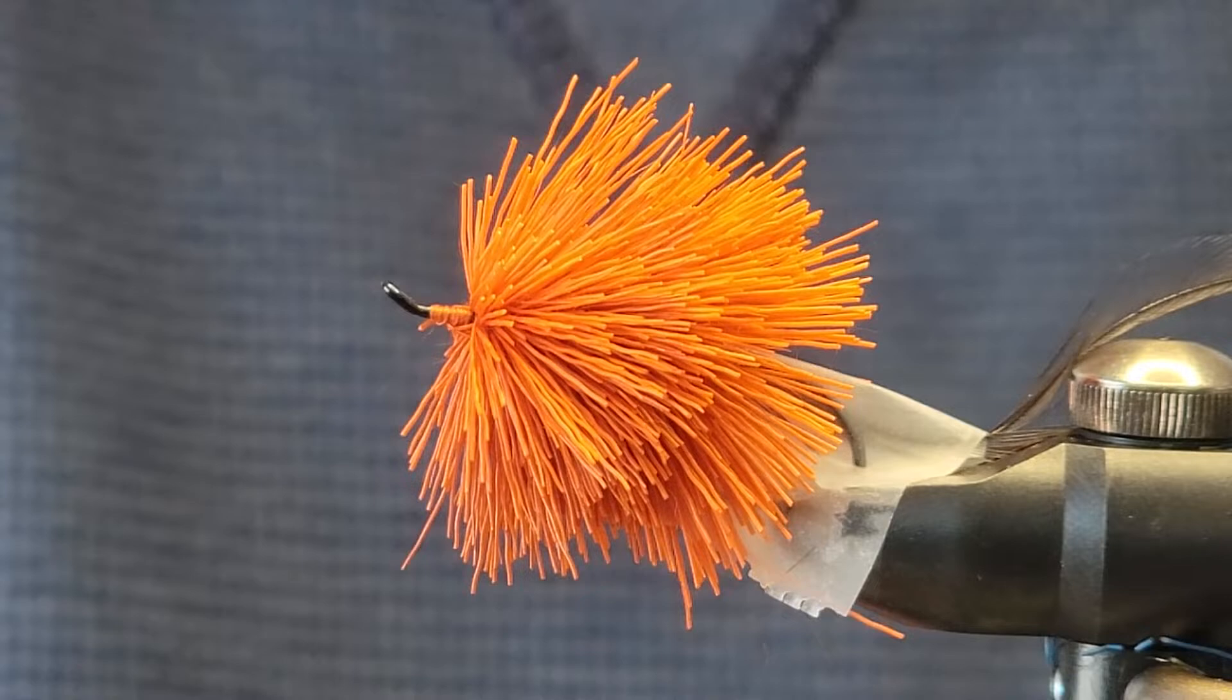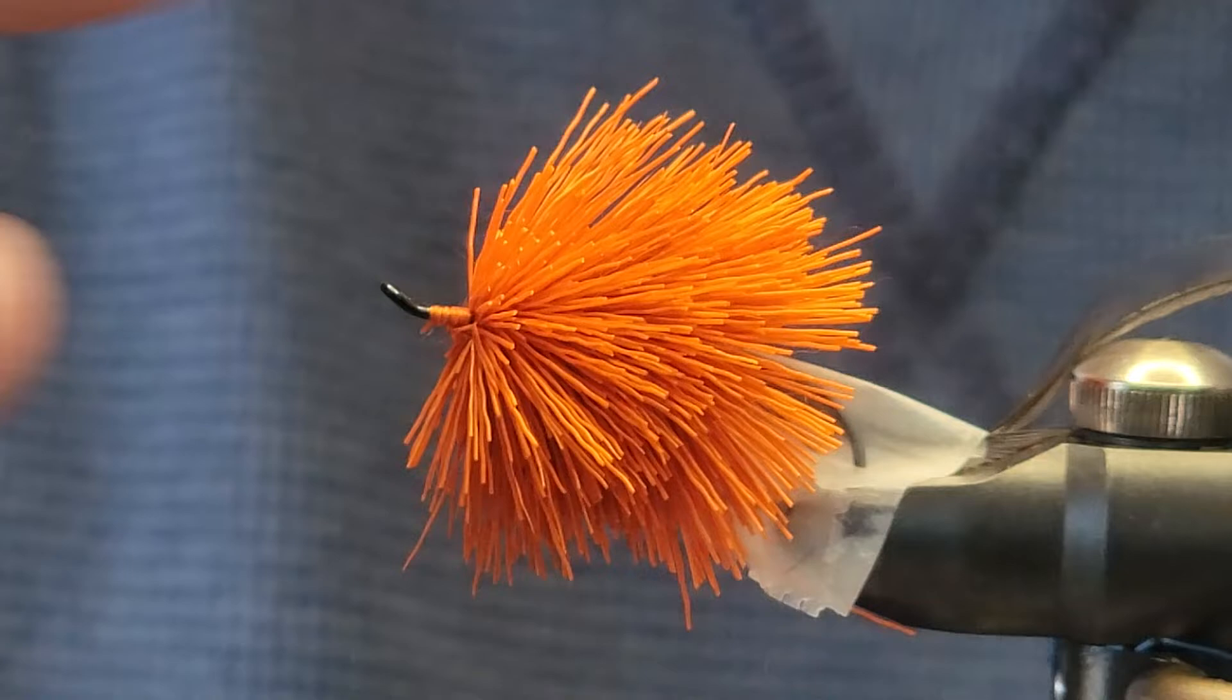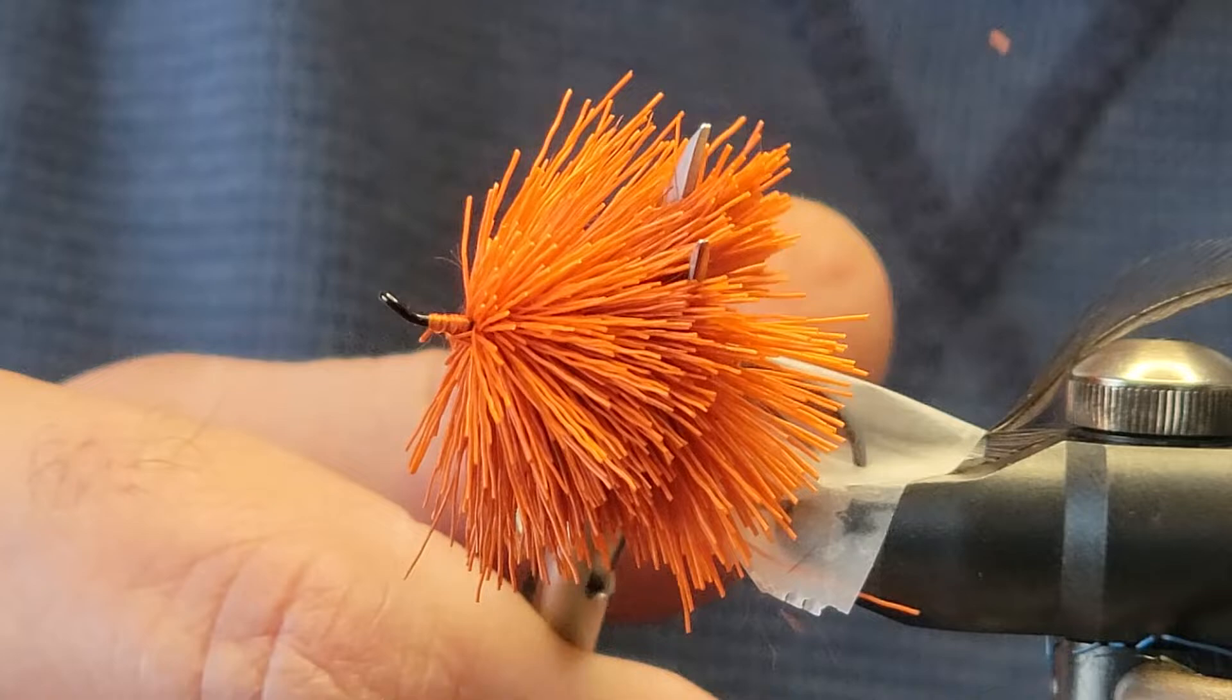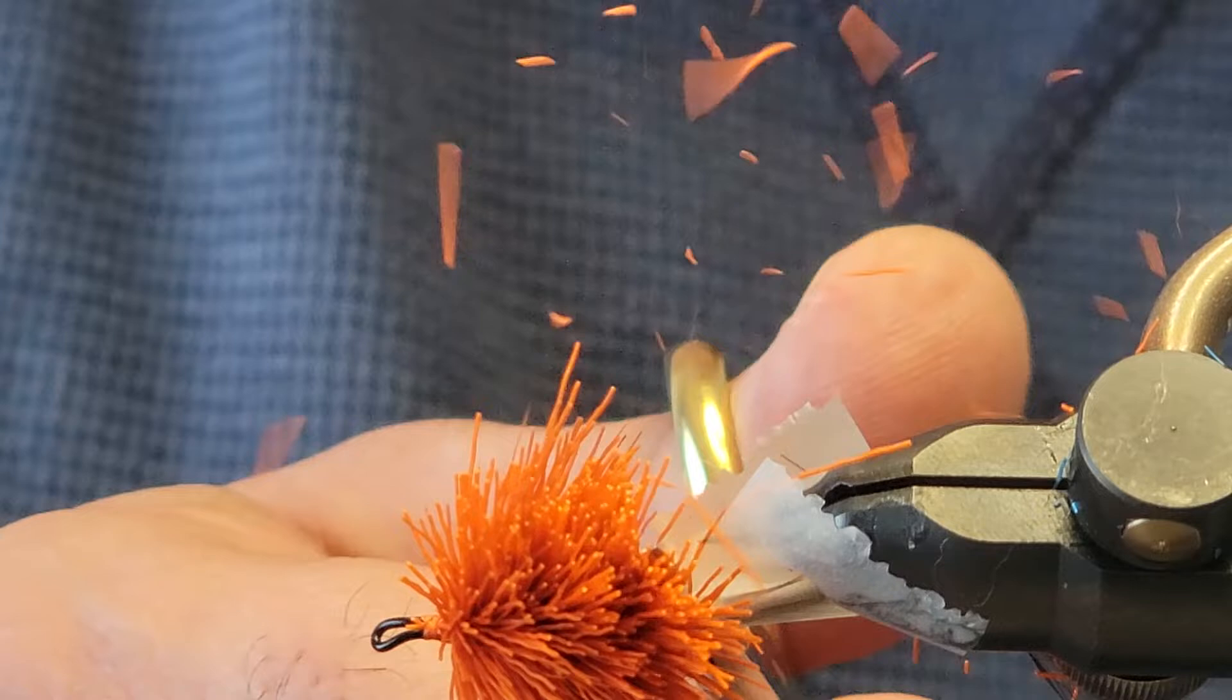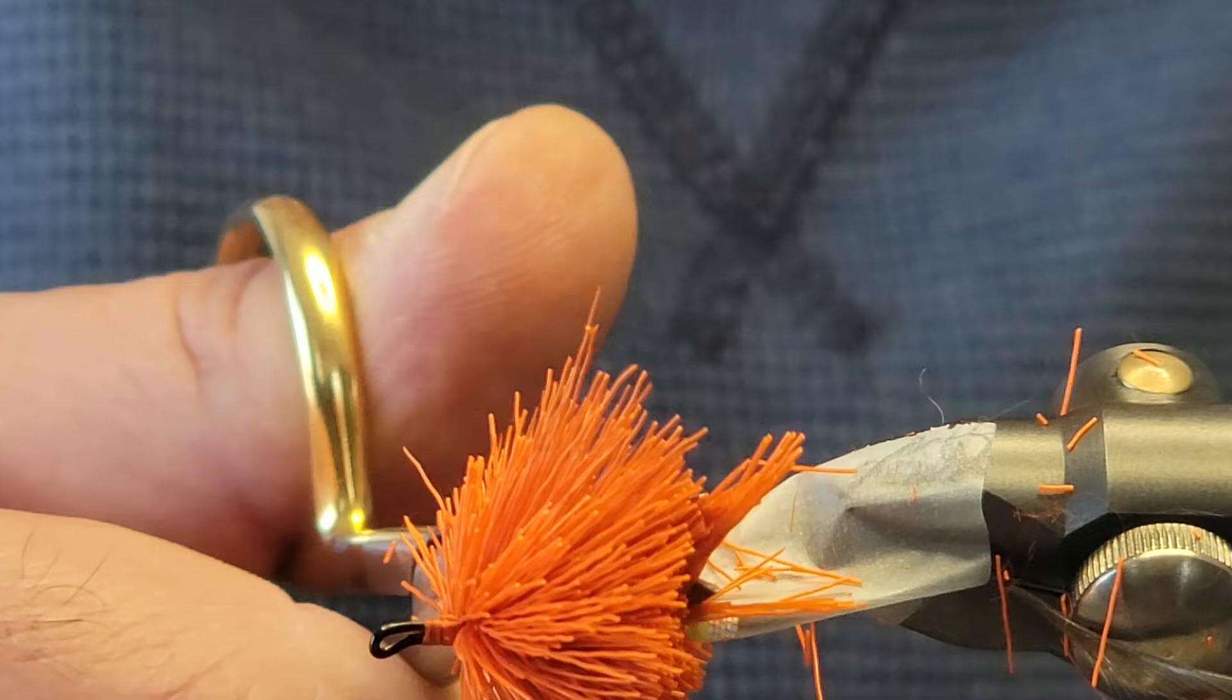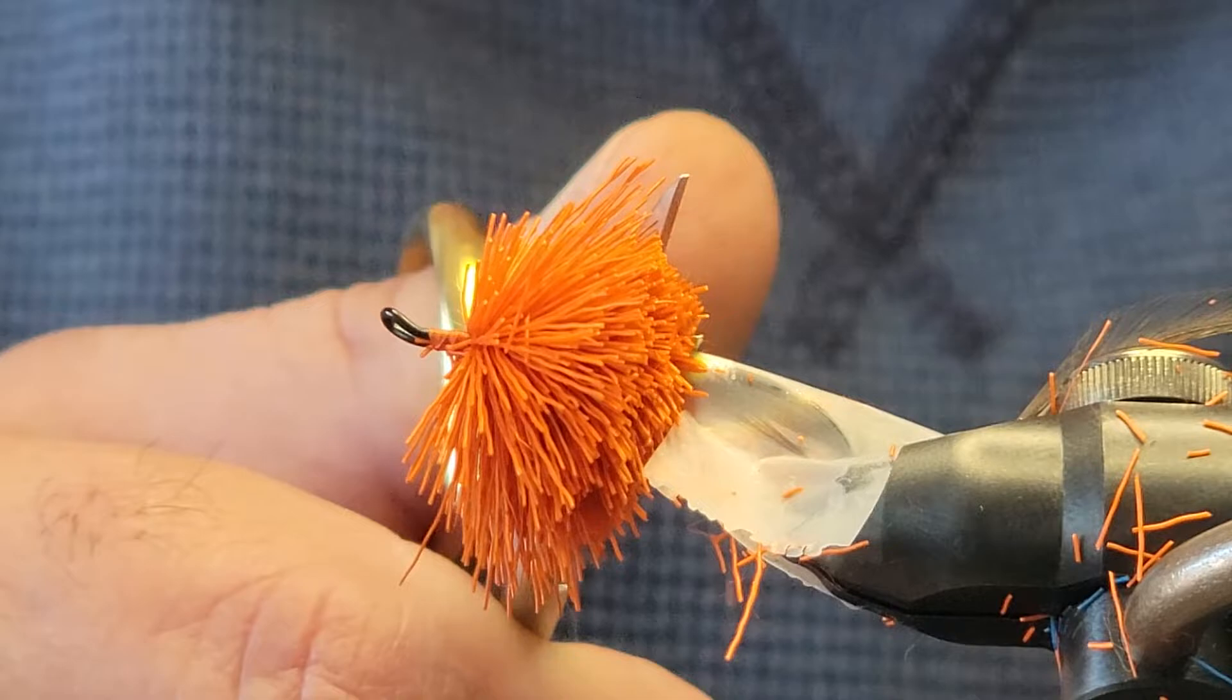Some people call this the fun part now, some people call it the pain in the butt part because it's time to trim. We're going to build this into a little cigar shape. Basically it's going to be wider around the head and then tapering down towards the tail. What I want to do now is go in and lift it up where the floss is and start clipping it there, just spinning your vise around. Making sure that you don't get the hackle, and that's why we put the tape there. But sometimes even with the tape there, you'll clip it.